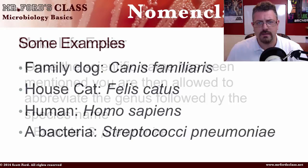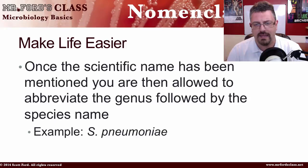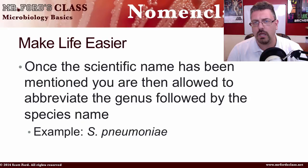There is a way to make life a little easier when you write the binomial naming system: once you have written the full name correctly, you then get to abbreviate the genus. For example, if I had written Streptococcus pneumoniae earlier in a paper or report, I could then abbreviate it as S. pneumoniae — still italicizing or underlining it.